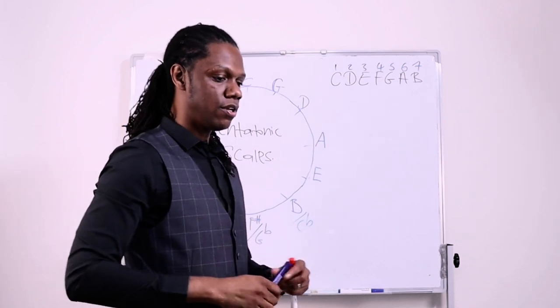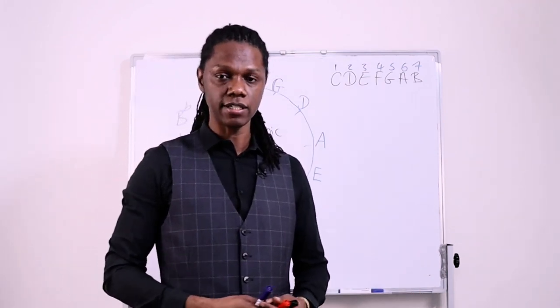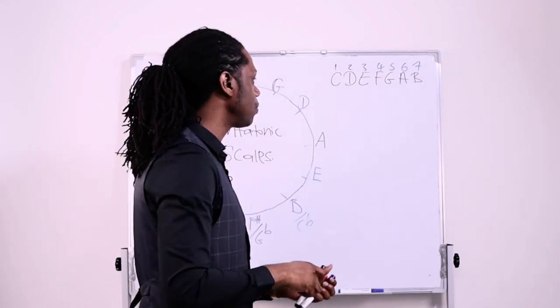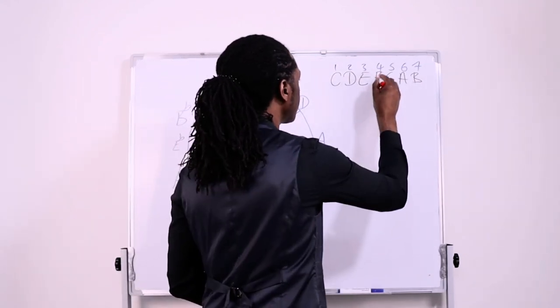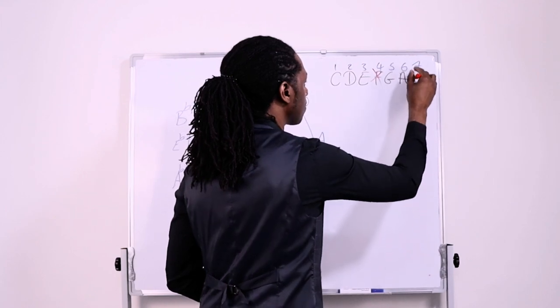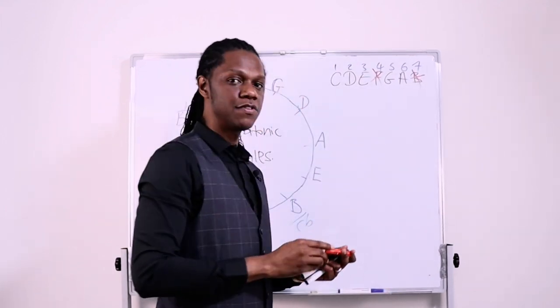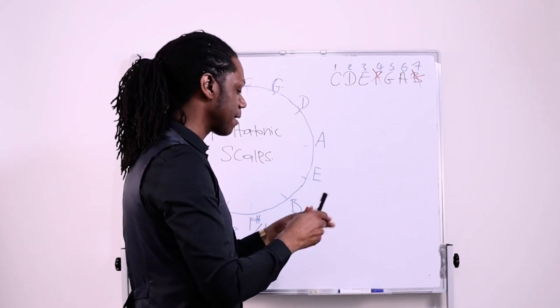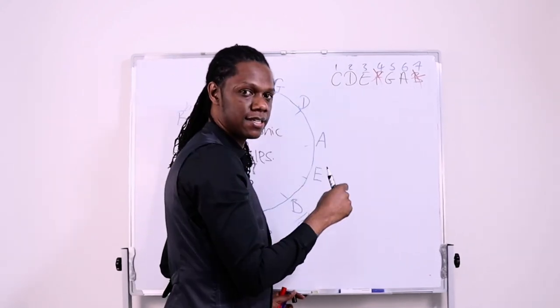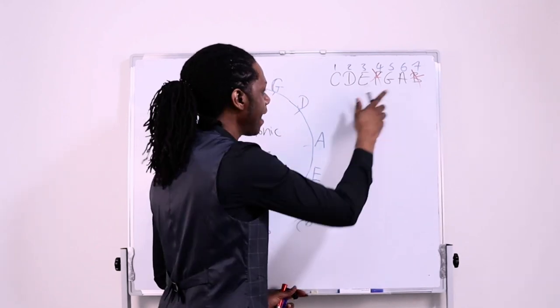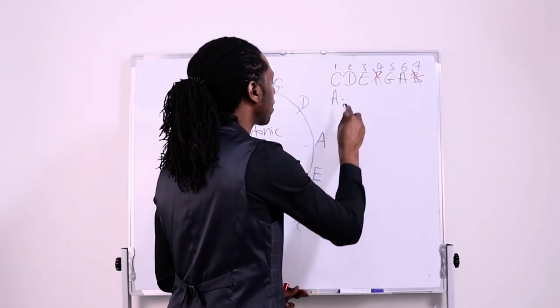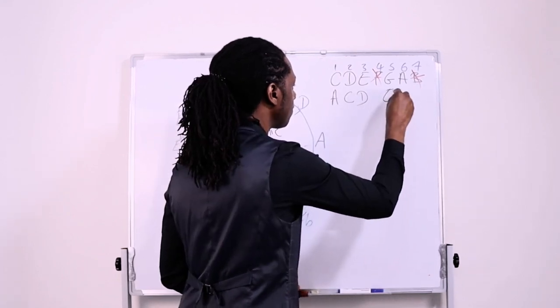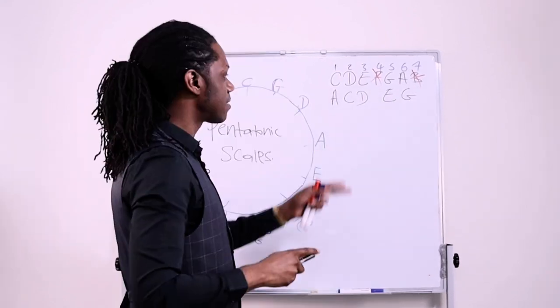So to learn any pentatonic scale, major pentatonic scale, all you do is make a major scale and you strike out the fourth degree and you strike out the seventh degree. And that leaves you with five notes.